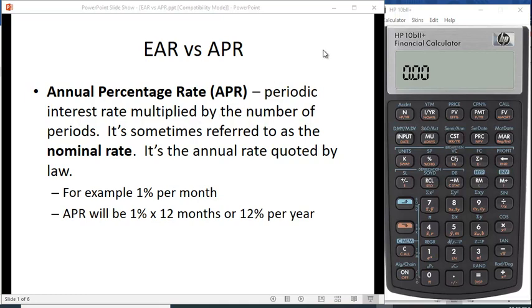If you happen to go into a bank, you may see a board there in the lobby that says the different rates on certificates of deposit: six months, one year, two years, three years. It might say that the APR is 1%, but then saying it's compounded monthly or daily, they'll tell you what the effective rate is. For example, if the rate is 1% per month, the APR will be 1% times 12 months or 12% per year.